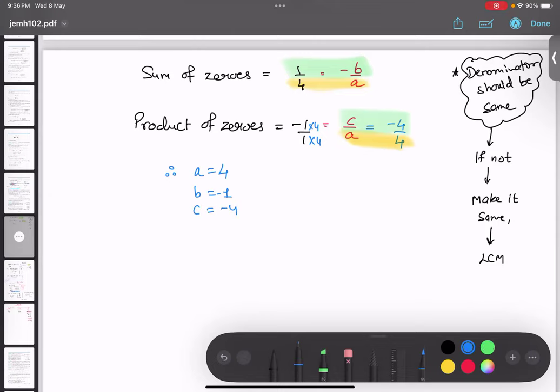Now, C value is minus 4. Minus 4. So, always remember A, B, C should be positive. So, their answer can be negative. But A, B, C in itself should be positive. So, I got A, B, C.